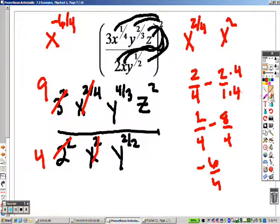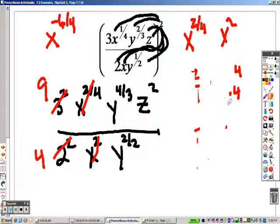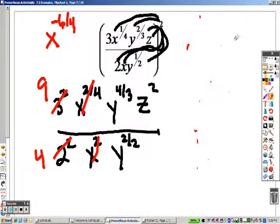Now I am on to my y's, so let's take a look at the y's, and see what we get here in dealing with the y's now. With the y's, it's y to the 4 thirds, and y to the 2 over 2, which is 1.